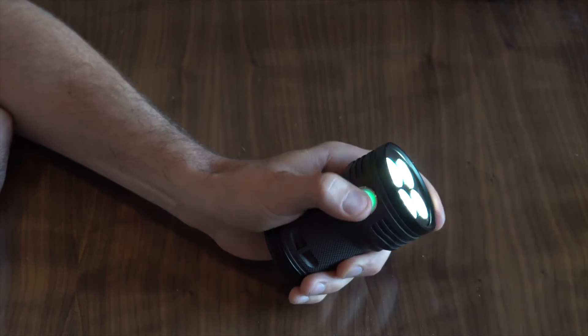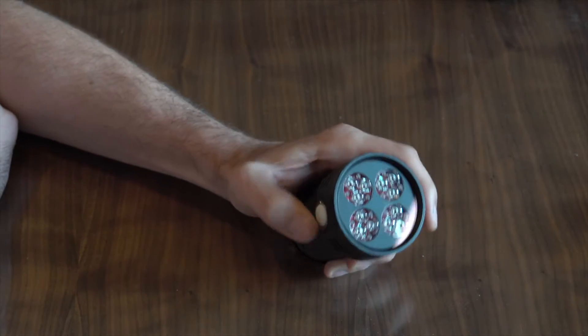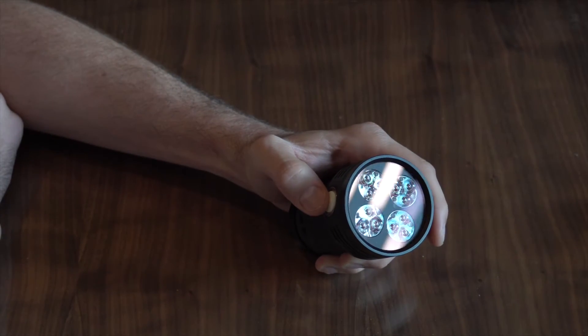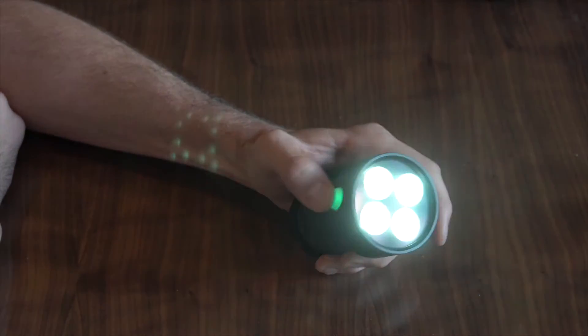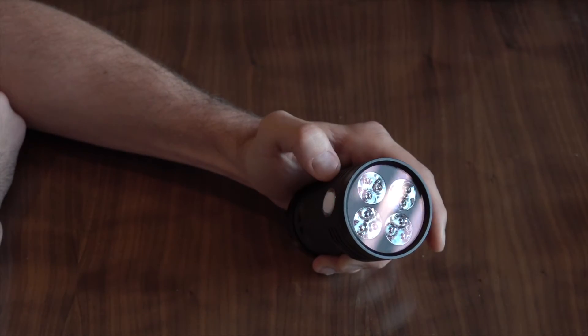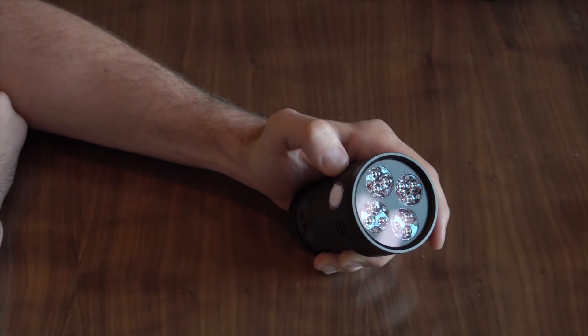On functions that can be enabled or disabled the light will either blink once for disabled or twice for enabled. For example, to turn on or off the front indicator beacon light you would click it three times and then hold. Right now you can see it's on. So one two three and then hold. The light blinked once. Now we're going to do it again to turn it back on. One two three and hold. The light blinked twice to show that it's now enabled.